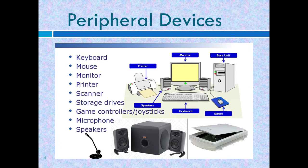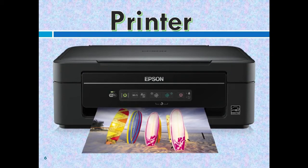Imagine writing a letter in a computer but not being able to print it. Or you may want to watch a DVD but cannot hear sound because there is no speaker. You would definitely like a computer with peripheral devices. There are many peripheral devices; some are used for input or for output. A printer — we use a printer to print copies of letters and reports that we write in the computer. We also use it to print emails and interesting web pages. Some printers can also print very good photos and drawings.